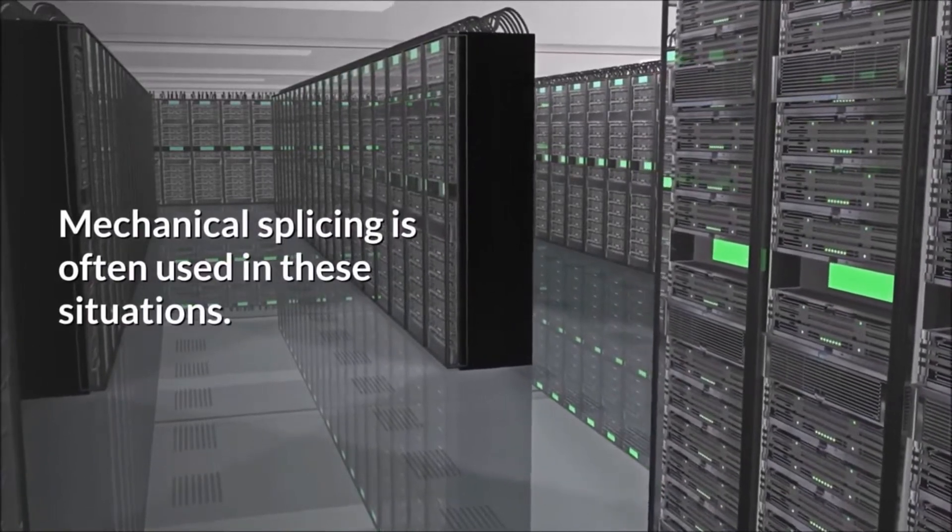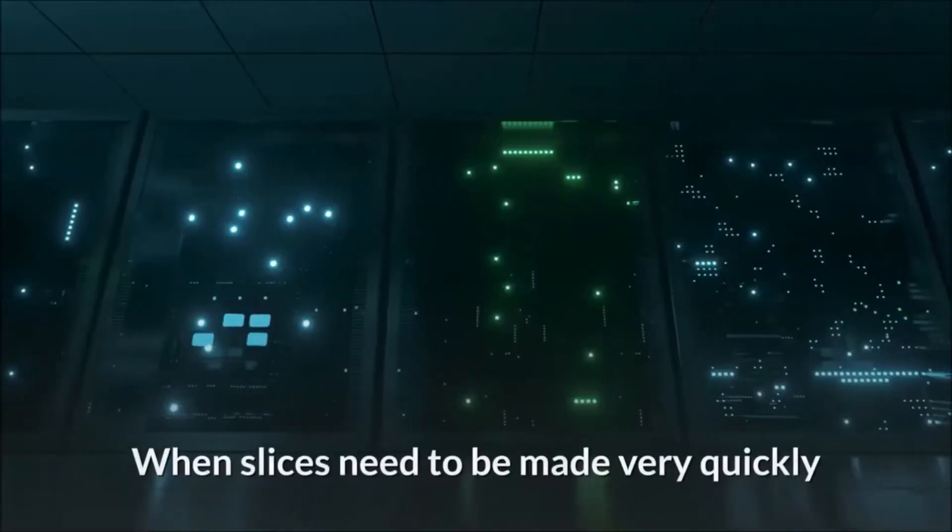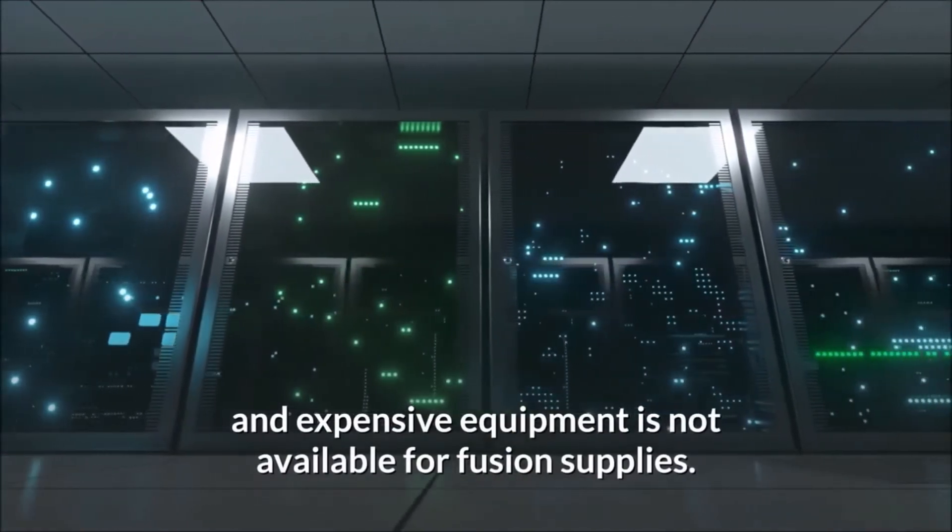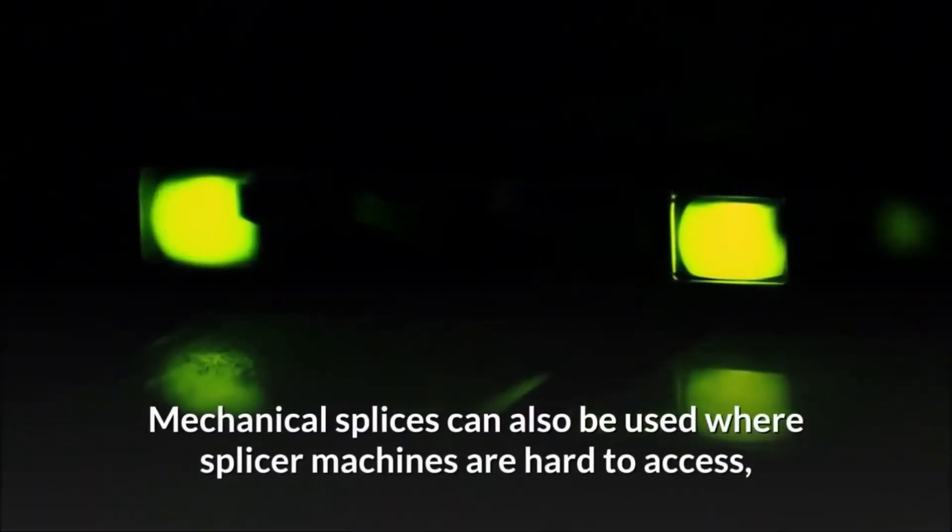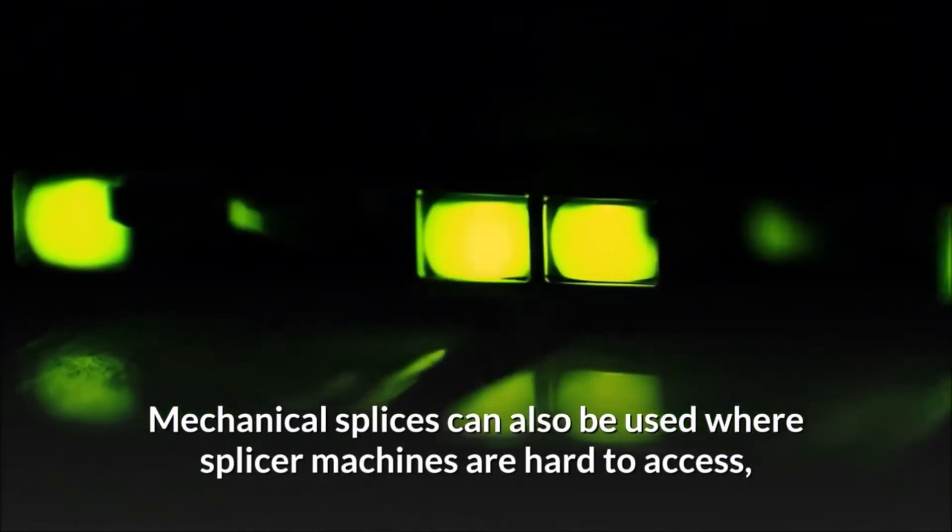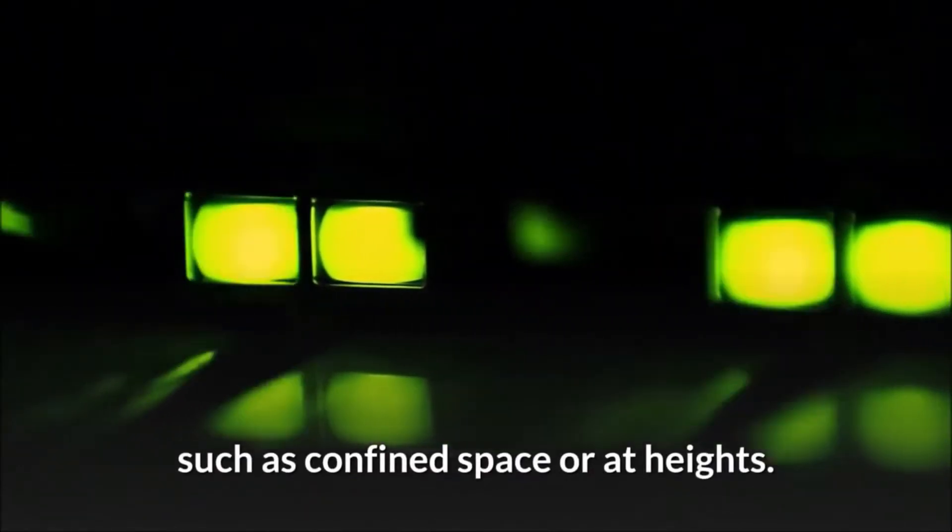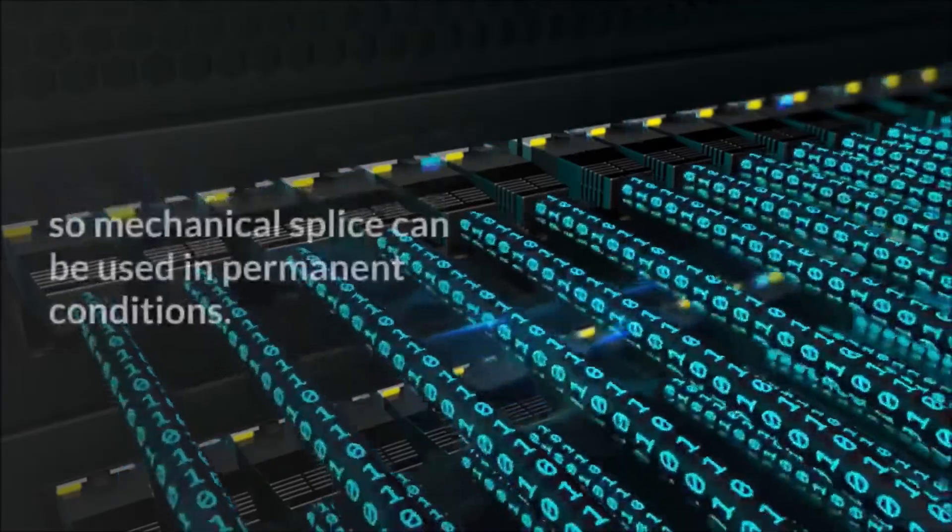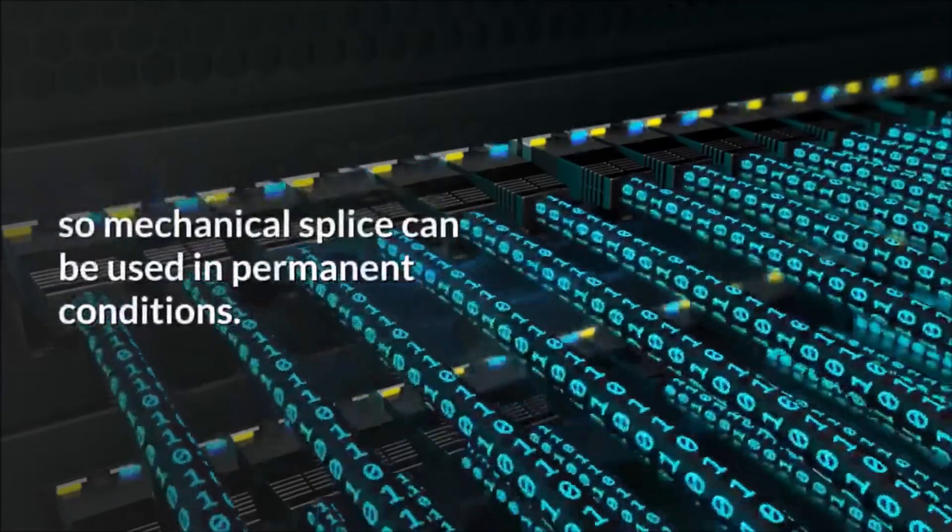Mechanical splicing is often used in these situations: when splices need to be made very quickly and expensive equipment is not available for fusion supplies. Mechanical splices can also be used where splicer machines are hard to access, such as confined space or at heights. Some mechanical fiber optics allows connections and disconnections, so mechanical splice can be used in permanent conditions.